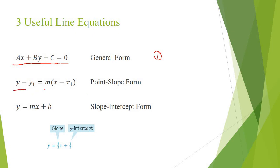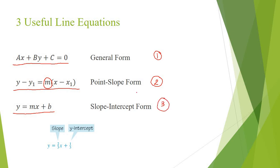The second equation that is very useful is the point-slope form: y minus y₁ is equal to m times x minus x₁, where m is the slope of the line. Another very useful equation is the slope-intercept form: y equals mx plus b. These are the three most useful line equations when dealing with problems for equations of lines.